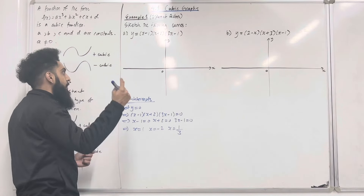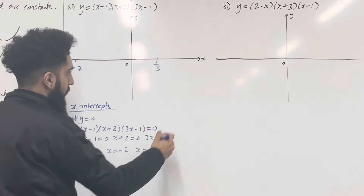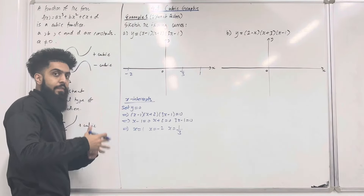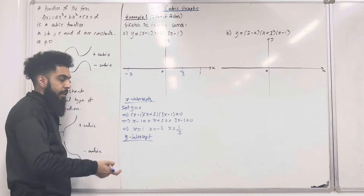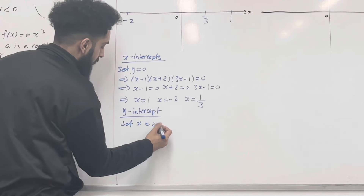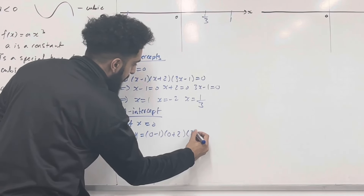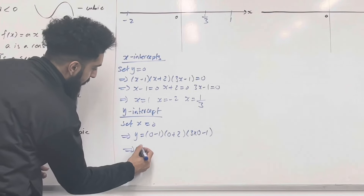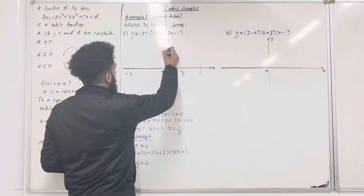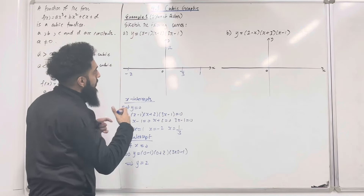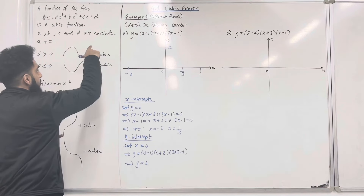These are my x-intercepts. I can label them on the coordinate grid: negative 2, positive one third, and positive 1. Now I'm going to find the y-intercept by setting x equal to 0. This gives y equal (0 minus 1)(0 plus 2)(3 times 0 minus 1), which multiplies out to y equal 2. So y equal 2 is the y-intercept. Now we need to determine the shape of the curve, which depends on the coefficient of x cubed. If positive, it's a positive cubic; if negative, it's a negative cubic.